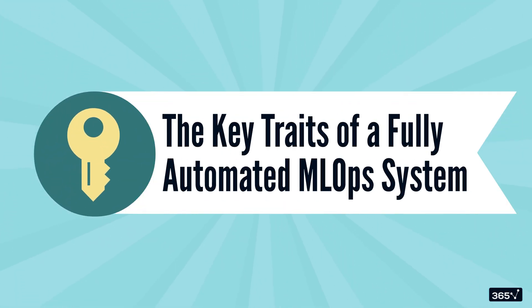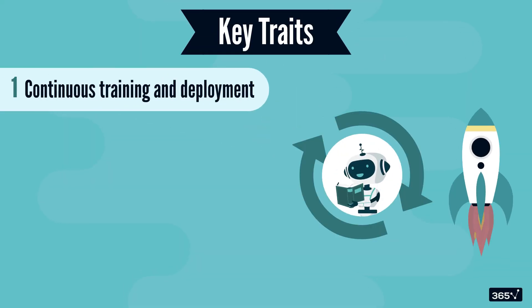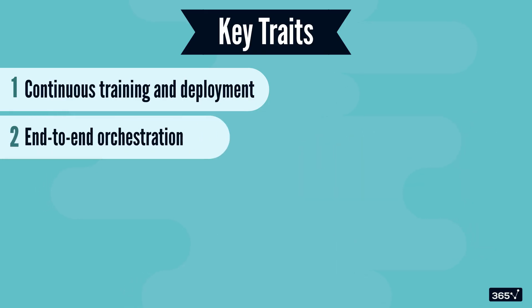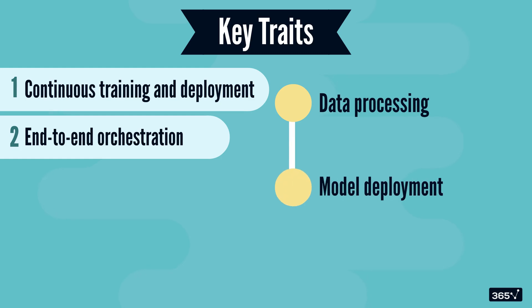The key traits of a fully automated ML Ops system: first, there's continuous training and deployment — models don't just sit there waiting for someone to update them, they retrain and deploy automatically whenever it's needed. Then there's end-to-end orchestration, where every step from data processing to model deployment is seamlessly connected.